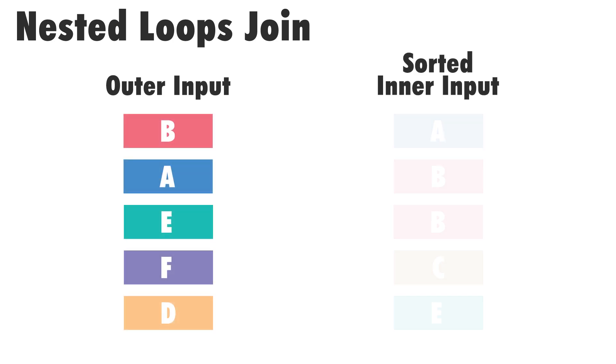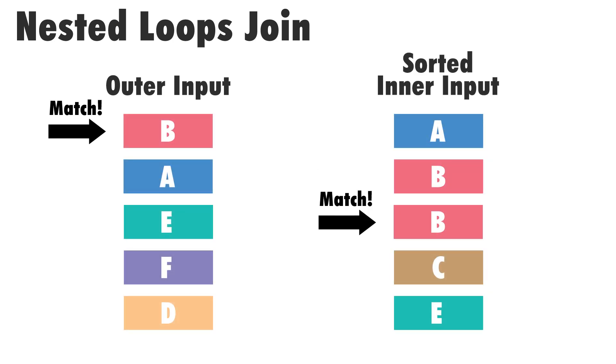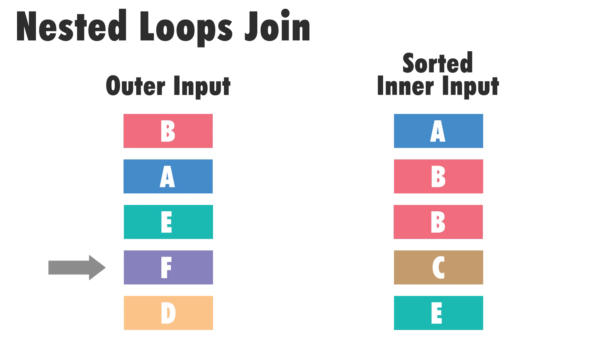There are some optimizations that exist within the nested loops join operator that can make it work faster. The example we just looked at is kind of a worst case scenario. One thing that could improve performance is when the inner table has its data pre-sorted, which can be done either through an index that we create or through a spool or an index that SQL Server creates at runtime. In that scenario we're able to save quite a bit of time when iterating over every value in our inner table, because SQL Server can seek to the rows it needs to compare against the outer table instead of having to compare every single row. This reduces the total number of comparisons that need to be made, improving performance.